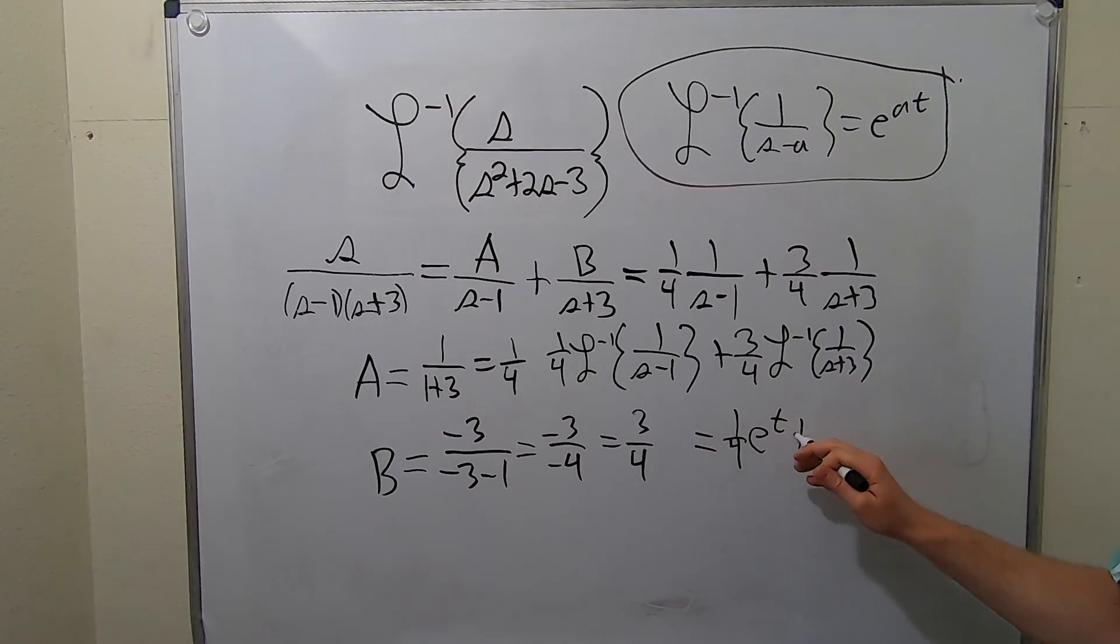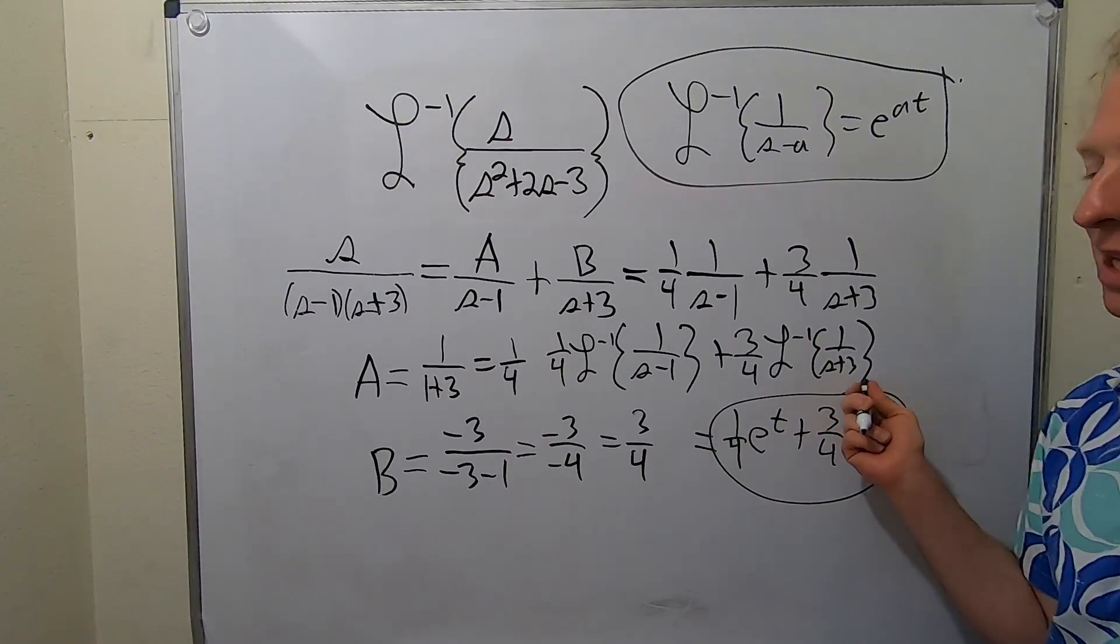So it's one-fourth e to the t plus three-fourths e to the negative 3t. It's negative 3t because it's s minus negative 3.